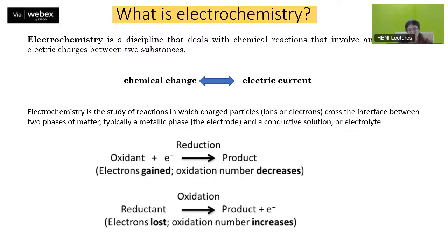Electrochemistry is a study of reactions in which charged particles — ions or electrons — cross the interface between two phases of matter, typically a metallic phase (the electrode) and a conductive solution (the electrolyte). In reduction, an electron is added to the oxidant to get the product. In oxidation, the product releases electrons — electron lost, oxidation number increases, and that process is called oxidation.